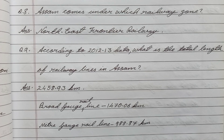Question number nine: According to 2012–13 data, what is the total length of rail lines in Assam? Answer: Two thousand four hundred fifty-eight point nine three kilometers.